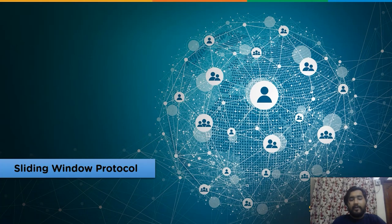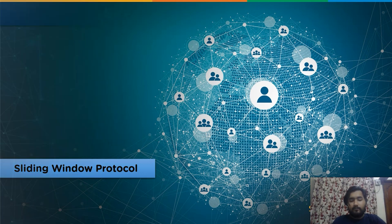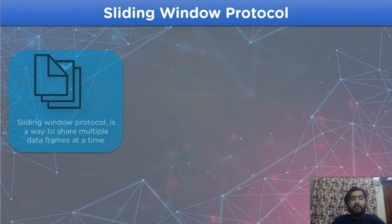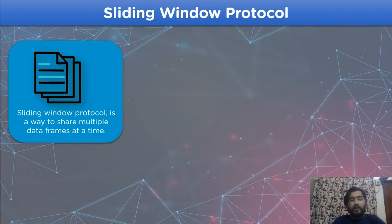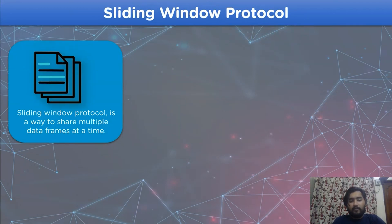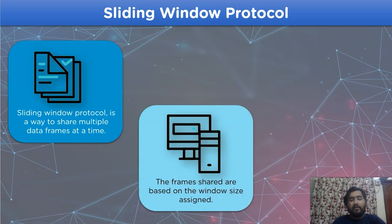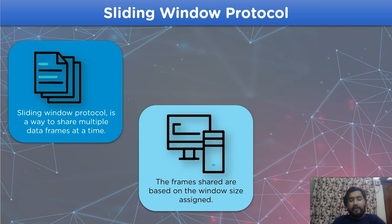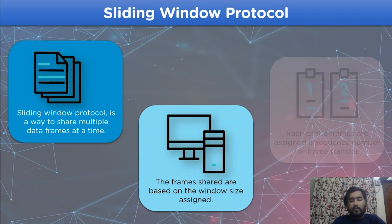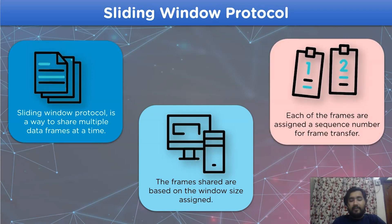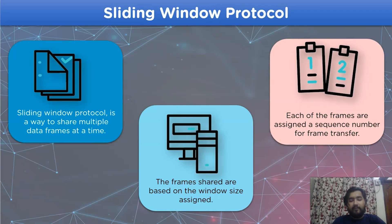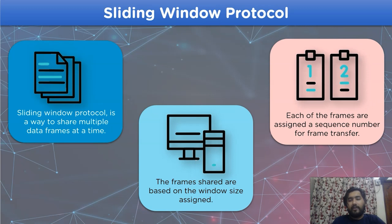Now let's look into the sliding window protocol. The sliding window protocol is a technique that allows the sharing of multiple data frames in a network channel, where the number of frames shared is determined by the window size assigned to the network channel. Also, the frames sent during transmission are assigned a sequence number for efficient frame transmission in the communication channel.